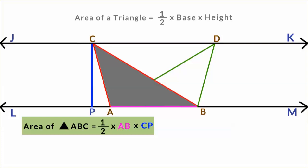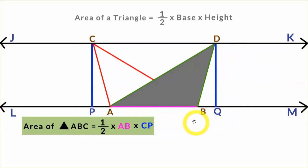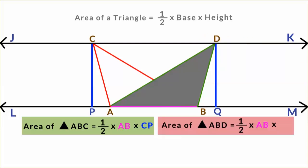Now let us consider triangle ABD. If I take AB as the base of triangle ABD, then the height of triangle ABD will be the line DQ, since DQ is perpendicular to the line LM. So it is the height of triangle ABD. And the area of triangle ABD will be given by half into base AB into height DQ.